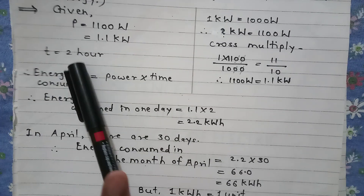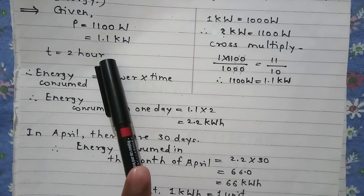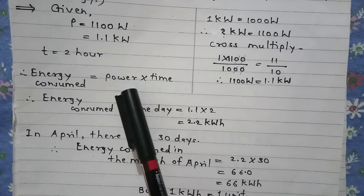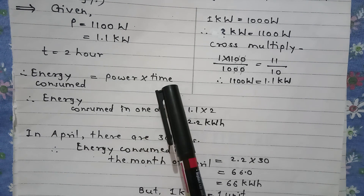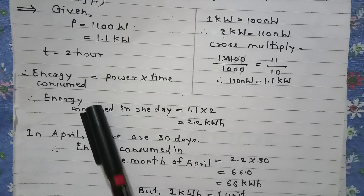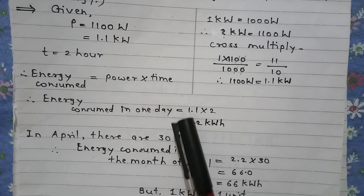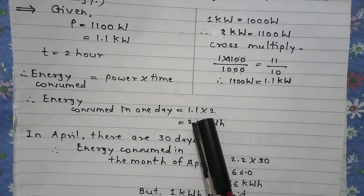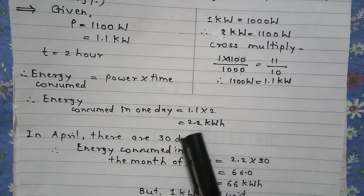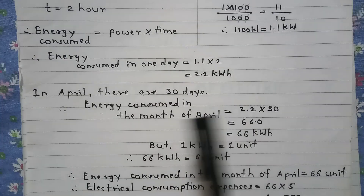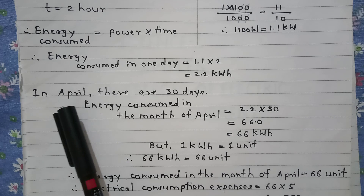T is equal to 2 hours is given. Energy consumed is equal to power into time. Therefore, energy consumed in one day is equal to 1.1 into 2, that is 2.2 Kilowatt hour.